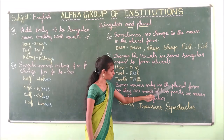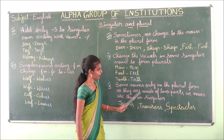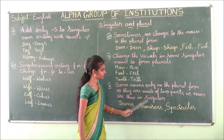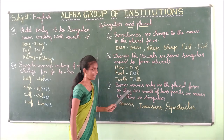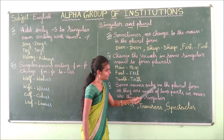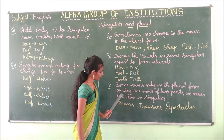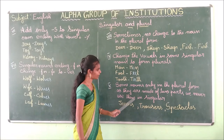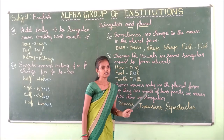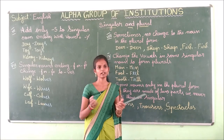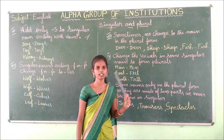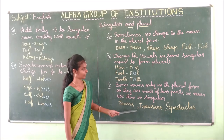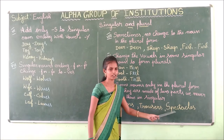Tenth rule: some nouns only exist in plural form because they are made of two parts — we never use them in singular. Examples: jeans, trousers, spectacles.